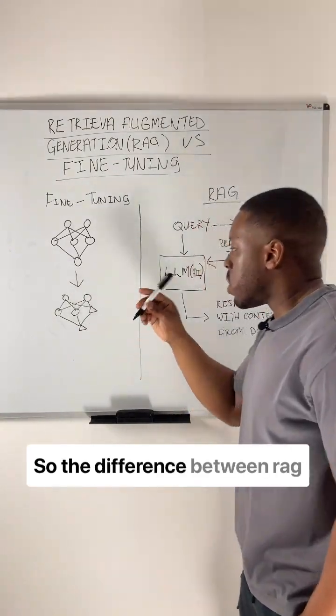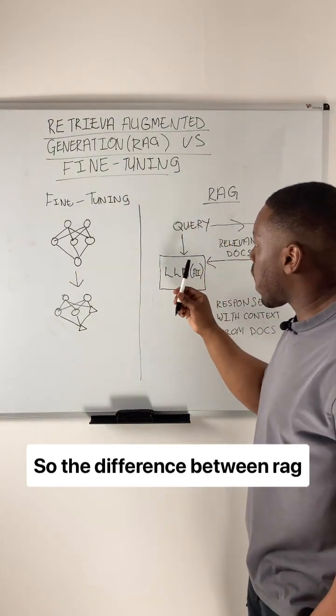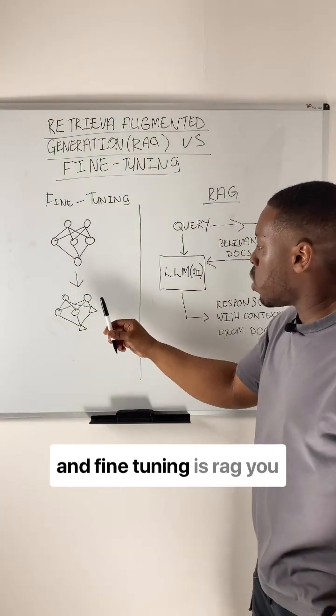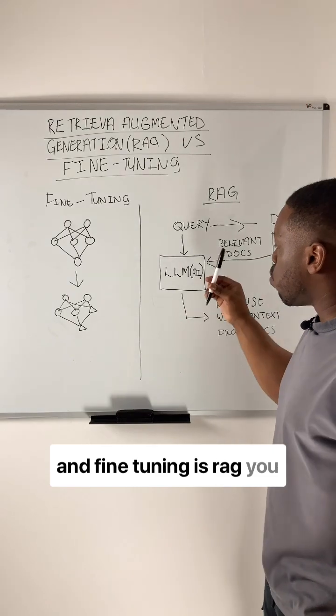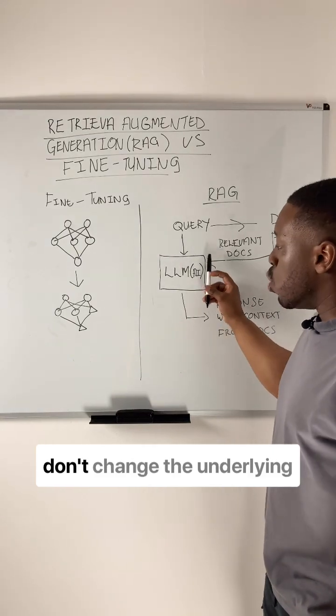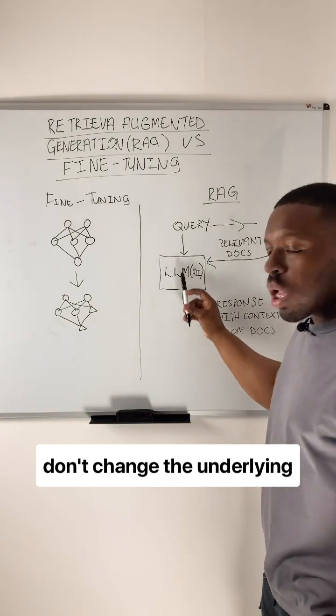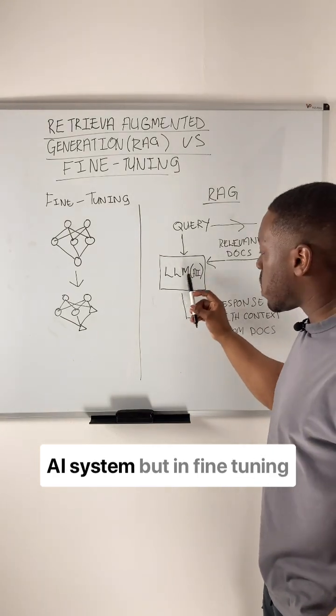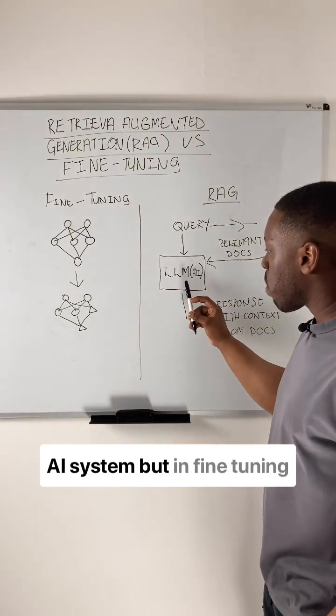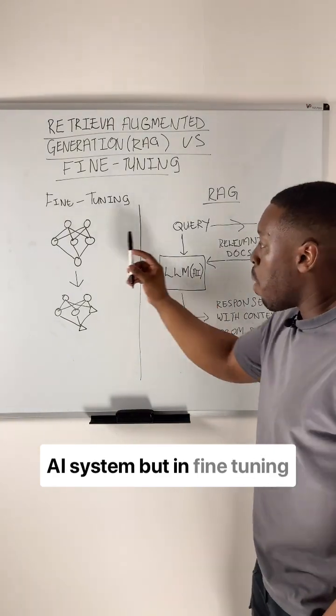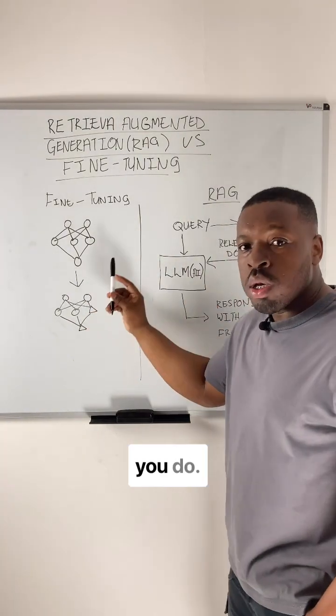So the difference between RAG and fine-tuning is: with RAG, you don't change the underlying AI system, but with fine-tuning, you do.